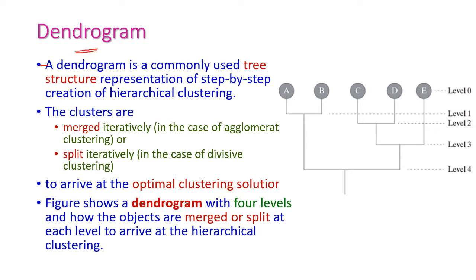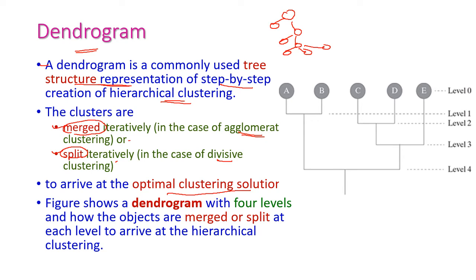Next, let us see the dendrogram. It is a commonly used tree structure representation of the step-by-step creation of hierarchical clustering. The tree is generated step by step. If it is agglomerative, clusters are merged at each step; if divisive, clusters are split iteratively to arrive at the optimal clustering solution. This sample dendrogram has four levels — level 0, 1, 2, 3, 4 — where objects are merged or split at each level.